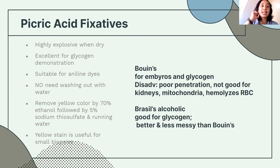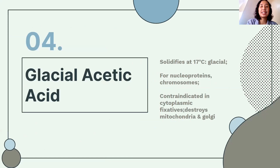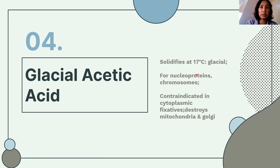Glacial acetic acid: it is called glacial because it solidifies at 17 degrees Celsius. It is used for nucleoproteins and chromosomes — good for the nucleus but bad for the cytoplasm, as it destroys mitochondria and the Golgi body.